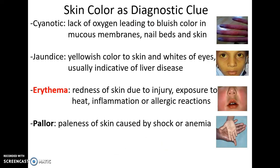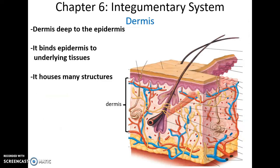Other things that can cause skin color to change include cyanotic conditions, where there's a lack of oxygen in certain areas of the body, leading to a bluish color to the skin, nail beds, and other mucous membranes. There's jaundice, a yellowish color to the skin and whites of the eyes, usually caused by liver disease. Erythema is a redness of the skin that can be caused by a minor injury, exposure to heat, a minor sunburn, inflammation, or even an allergic reaction. Pallor is a paleness of the skin that can be caused by a person going into shock or suffering from anemia.